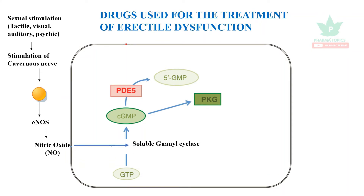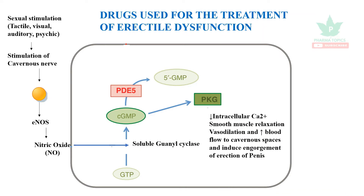In the target tissues of the penis, nitric oxide causes conversion of guanosine triphosphate via soluble guanylate cyclase, stimulating cyclic GMP. Cyclic GMP stimulates protein kinase G, which increases intracellular calcium leading to smooth muscle relaxation and vasodilation, increasing blood flow to the cavernous spaces and inducing engorgement and erection of the penis.